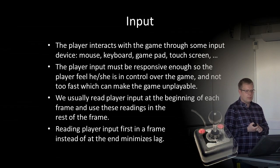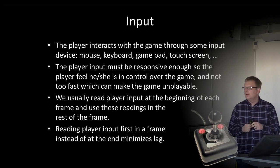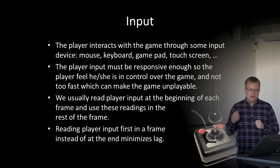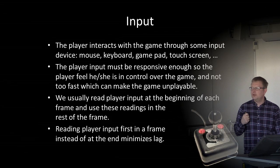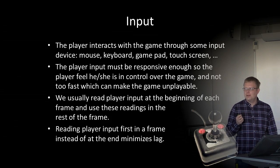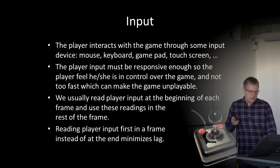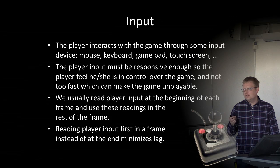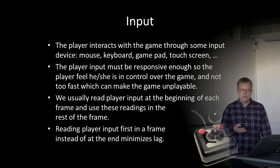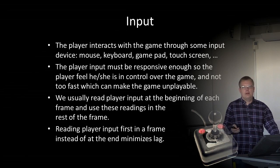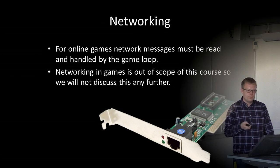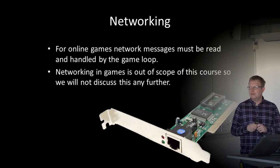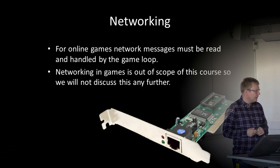The player interacts with the game through input devices: mouse, keyboard, gamepad, touch screen, or even cameras like Microsoft Kinect. Player input must be responsive enough that the player feels in control, but not so fast that the game becomes unplayable. We usually read player input at the beginning of each frame and use those readings for the rest of the frame — reading input first minimizes lag so there is no wait time before the game reacts. For online games, network messages must also be read and handled by the game loop, though networking is out of scope of this course.